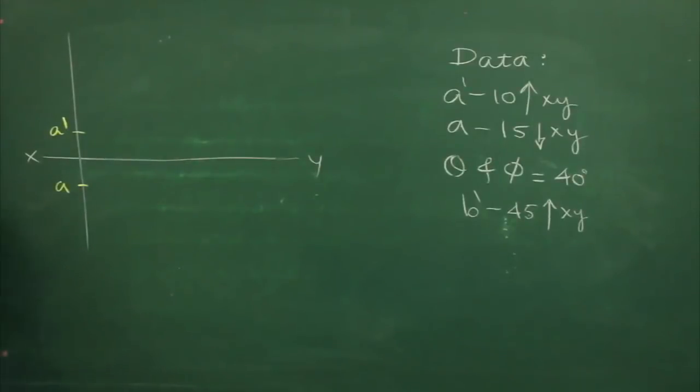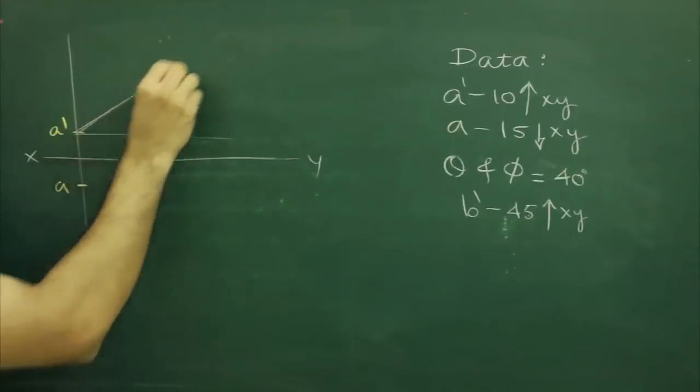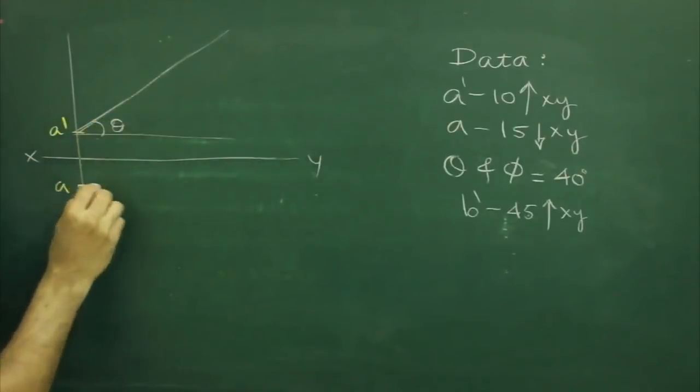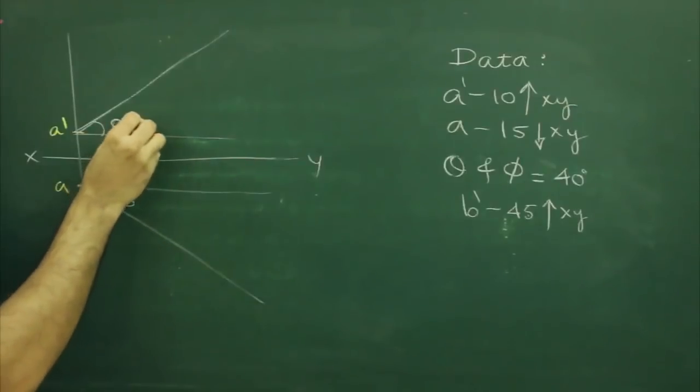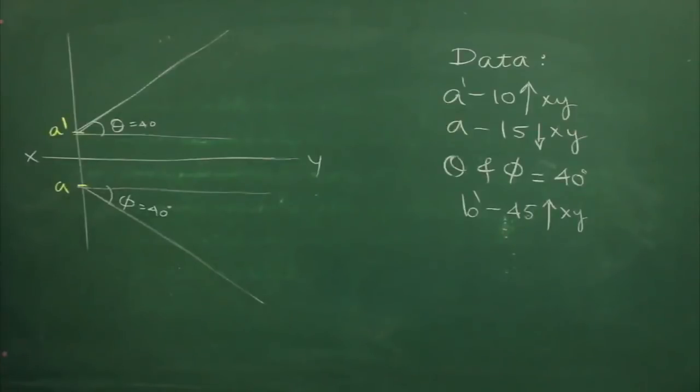After that we have given reference angles, theta and phi, both are 40 degrees, and we have point B dash which is above xy.